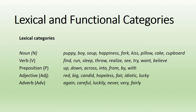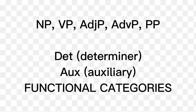Let's study the following examples. Nouns include: puppy, boy, soup, happiness, fork, kiss, pillow, cake, cupboard. Verbs include: find, run, sleep, throw, realize, see, try, want, believe. Prepositions include: up, down, across, into, from, by, with. Adjectives include: red, big, candid, hopeless, fair, idiotic, lucky. Adverbs include: carefully, luckily, never, very, fairly. So we have the categories: noun phrase, verb phrase, adjective phrase, adverb phrase, and prepositional phrases.